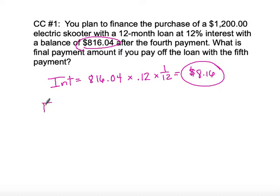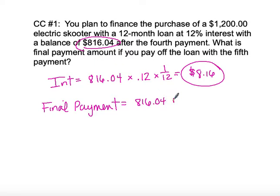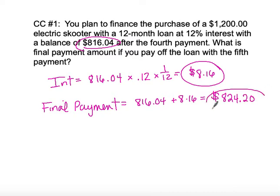Now we can calculate what his final payment will be. His final payment is his previous balance in addition to the interest from that previous balance, which gives us a total of $824.20. That's his final payment.